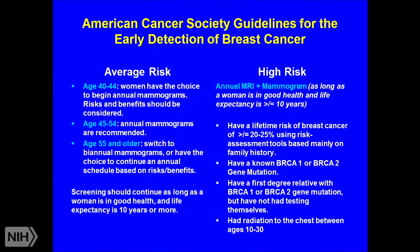Current guidelines for average-risk women: ages 40–44 have the choice to begin annual mammograms; ages 45–54, the American Cancer Society recommends annual mammograms; 55 and older can switch to biannual depending on risks and family history. For high-risk women, the recommendation is annual MRI and mammogram in combination. High risk is determined by risk assessment tools, for those with a greater than or equal to 20–25 percent lifetime risk of developing breast cancer.